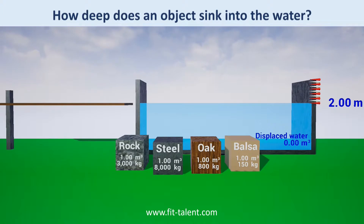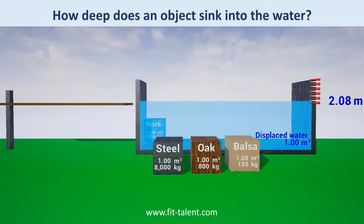An object sinks deeper into the water the denser it is. Rock has a density of 3,000 kilograms per cubic meter. It weighs a lot more than a cubic meter of water, so rock sinks.